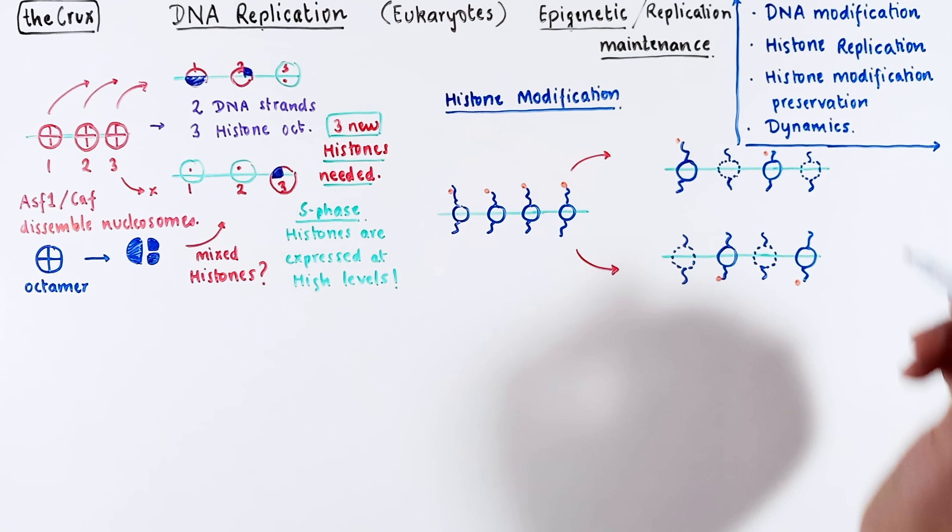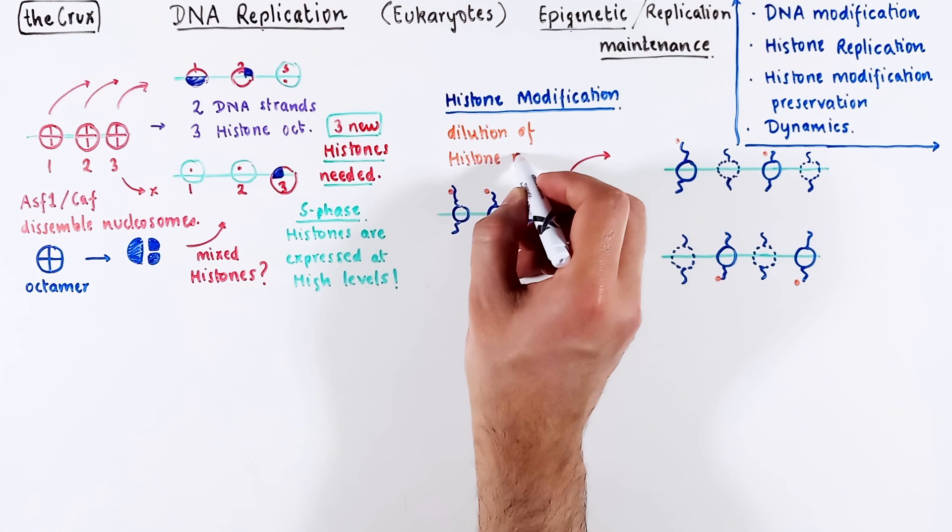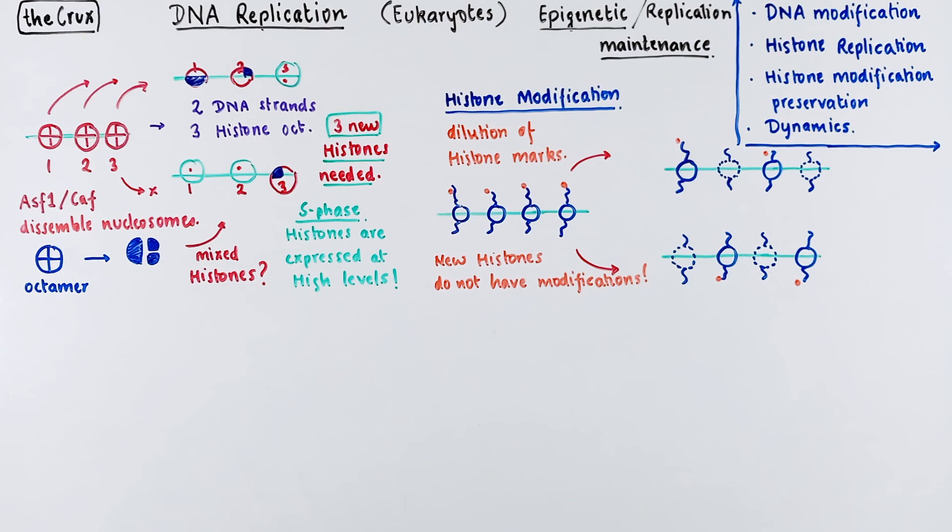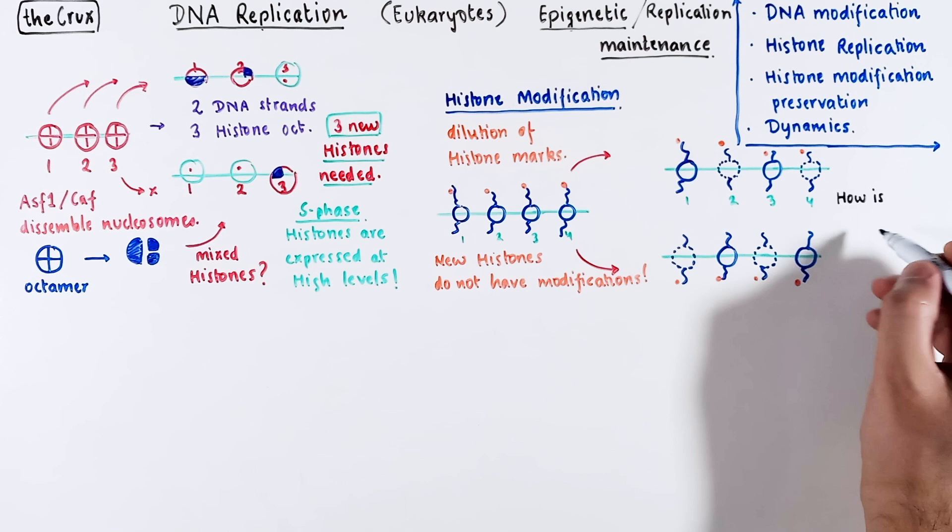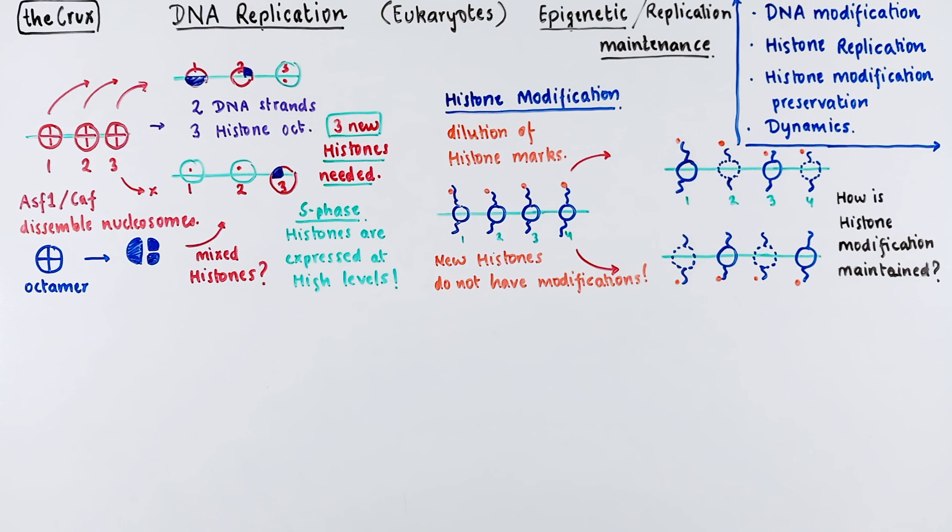But when new histones are added during the S phase, they will not carry any modification. So we have a dilution of the histone marks. And as I said, new histones do not have marks by default. So somehow the cell needs to restore the histone modification in both of these strands. And that is the second problem. How to maintain or copy the original state of the histone. In other words, how to overcome the dilution effect due to the DNA replication.